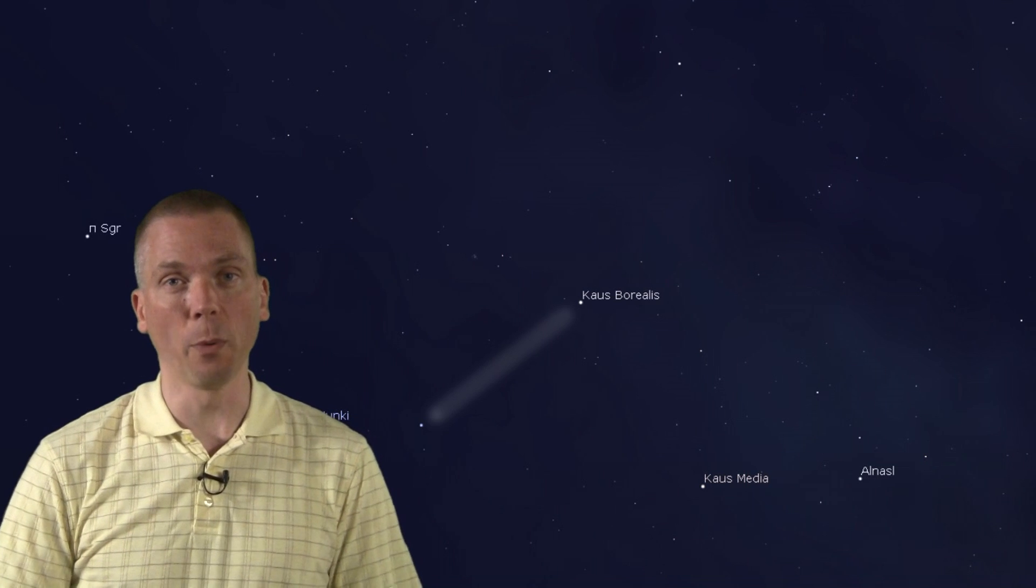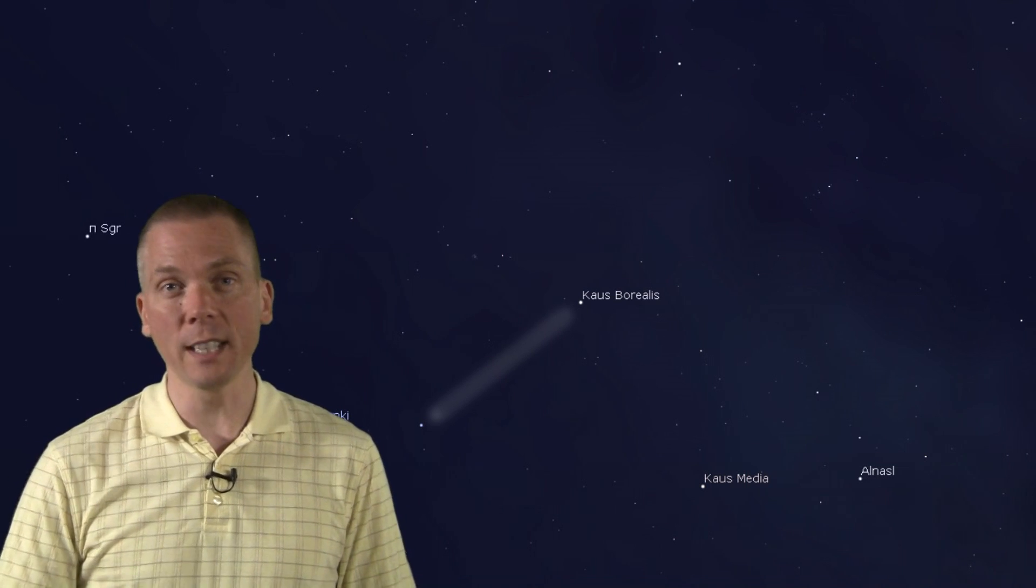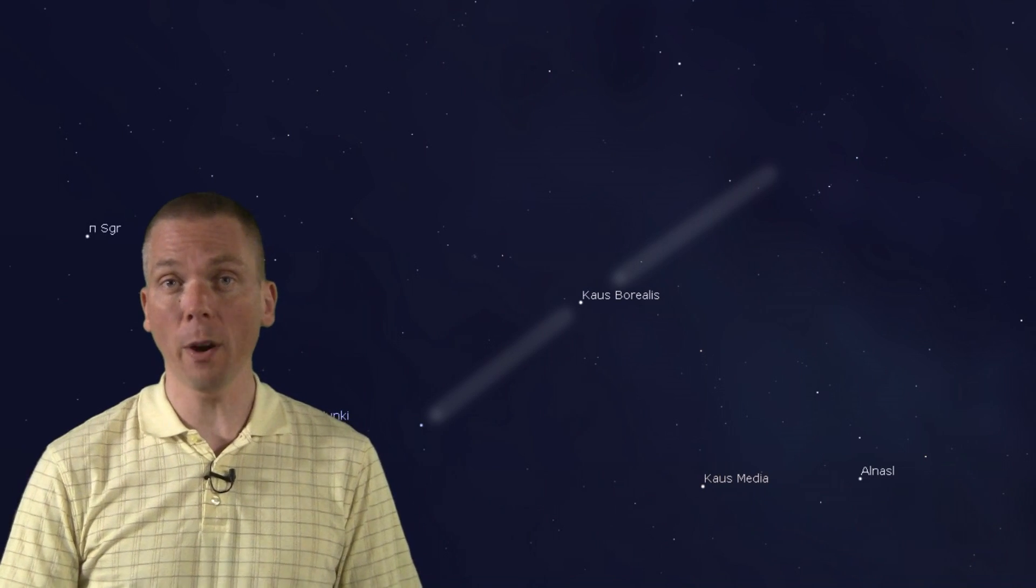From here, draw a line from Phi through Caus Borealis. Now go a similar distance past Caus, that those two stars are apart from each other. You'll find a backwards C-shaped set of stars, composed of ones from 5th through 7th magnitude. Notice the first stars for the lower section of the backwards C? That's the open cluster NGC 6530.